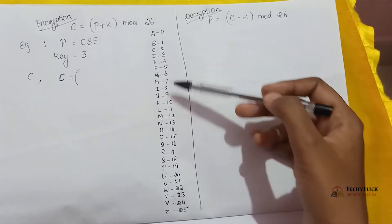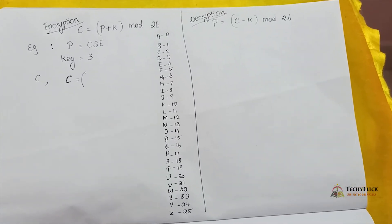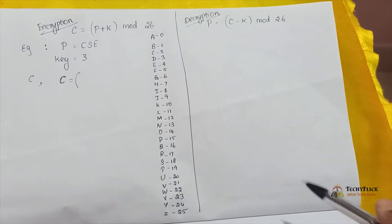A to Z, 0 to 25 are the numbers. We know all the letters mapped to numbers on the back side. For example, plain text is CSE. You can convert this to ciphertext.